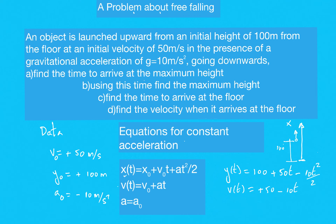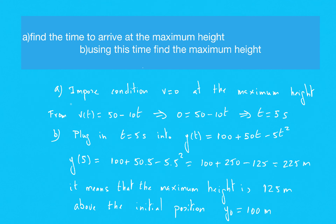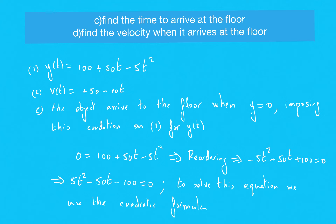Evaluating y(5) gives the maximum height measured from the floor, because y is measured from the floor. You can stop the video and review the calculation to obtain the maximum height. The equation of motion for v(t) is also done and shown here.